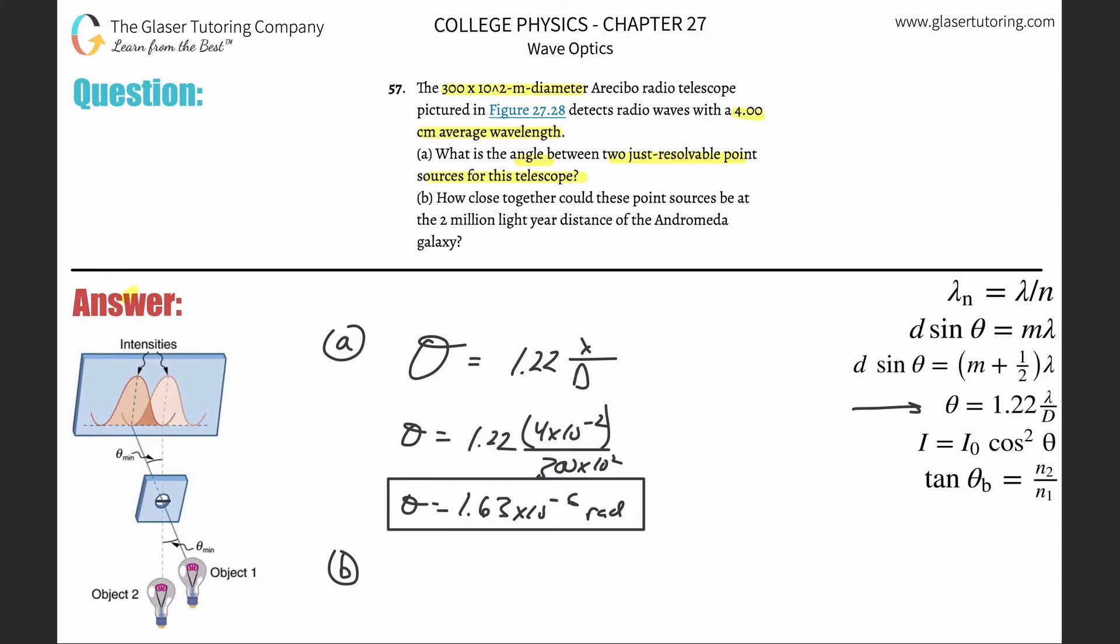Letter B: How close together could these point sources be at the 2 million light-year distance of the Andromeda galaxy? Now they're telling us a distance: 2 million light-years. We're not going to convert this into meters. We're going to leave the units in terms of light-years.